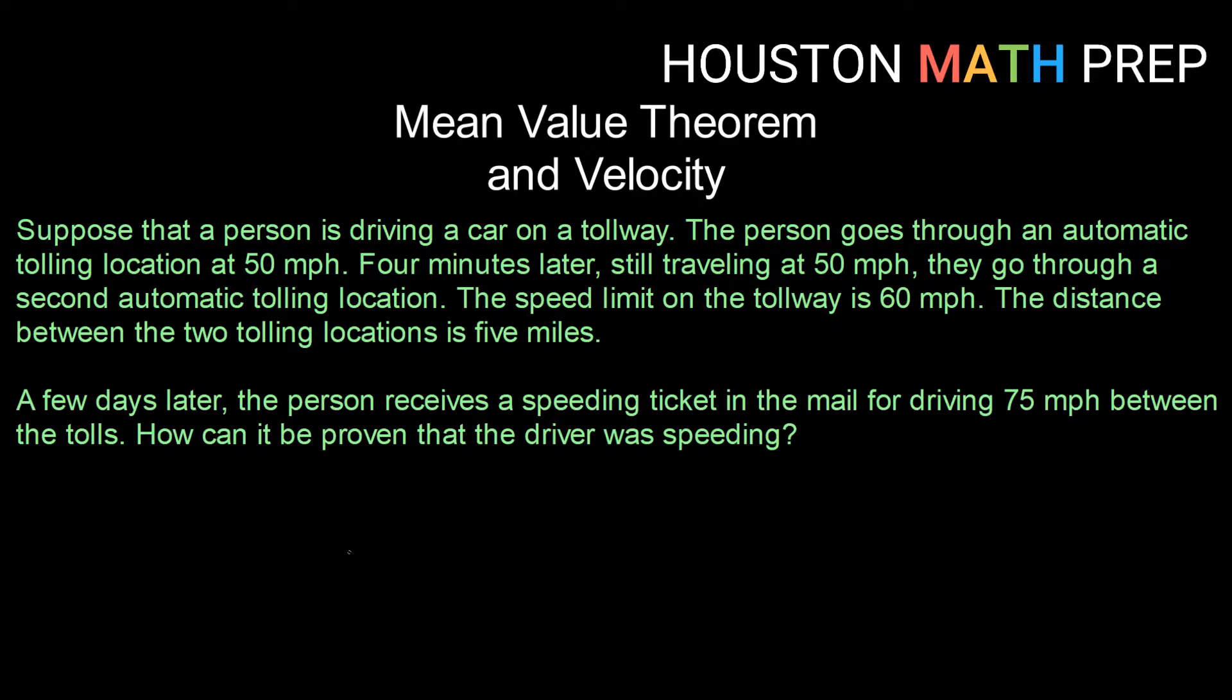A few days later, this person receives a speeding ticket in the mail for driving 75 miles per hour between the tolls. How can it be proven that the driver was speeding just based on their speed between the two tolls?